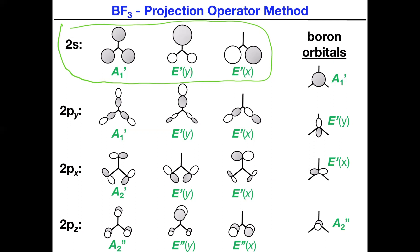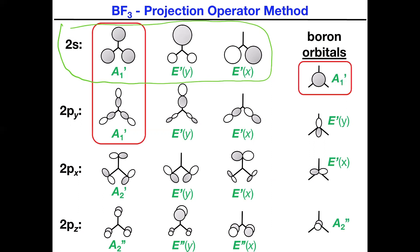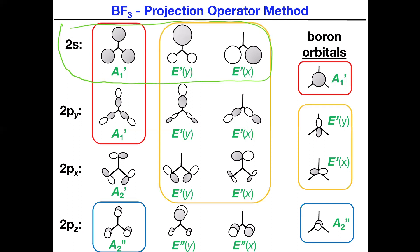There are a lot of orbitals here — this is about the most extreme example we're going to have of trying to do this by hand. There are the A1 prime symmetry matches, the A2 double prime symmetry matches, and multiple E prime X and Y symmetry matches. And there are three orbitals that have no symmetry match at all, which helps simplify the problem. Considering energetics will simplify things a little more.